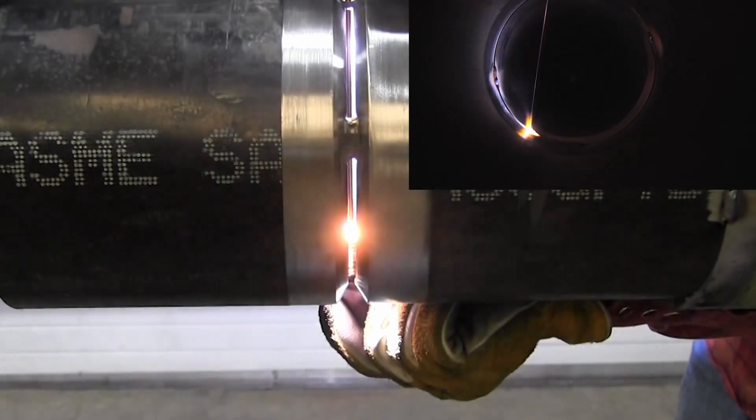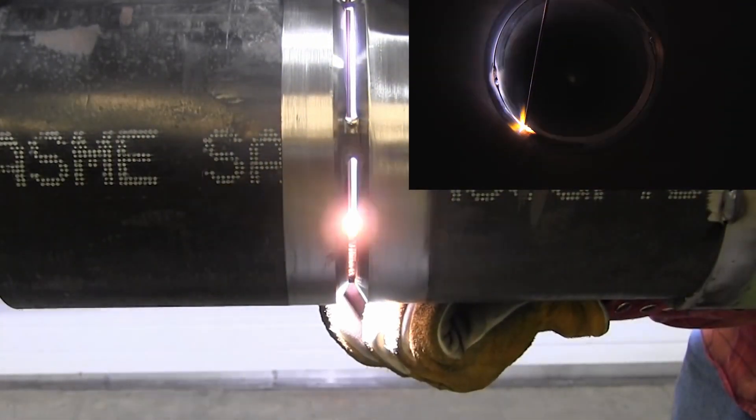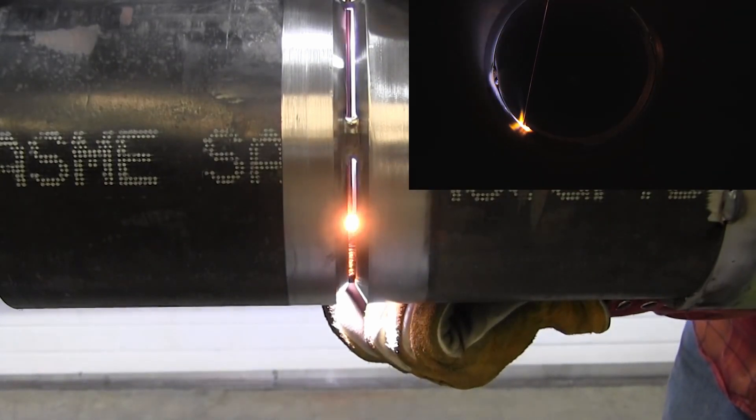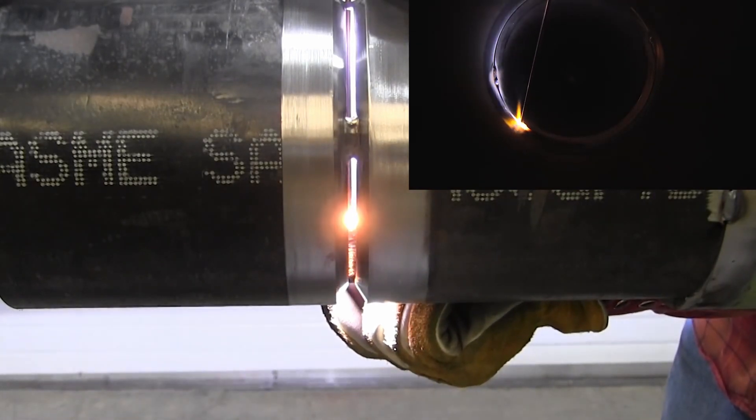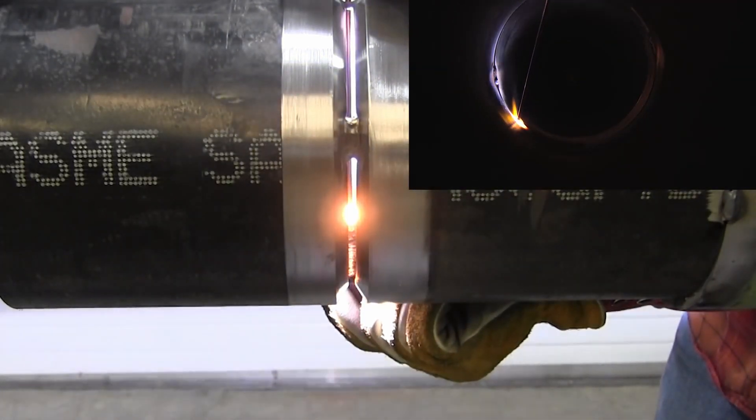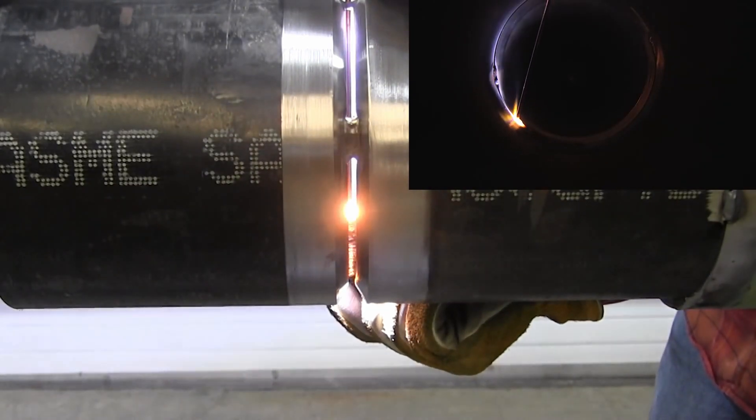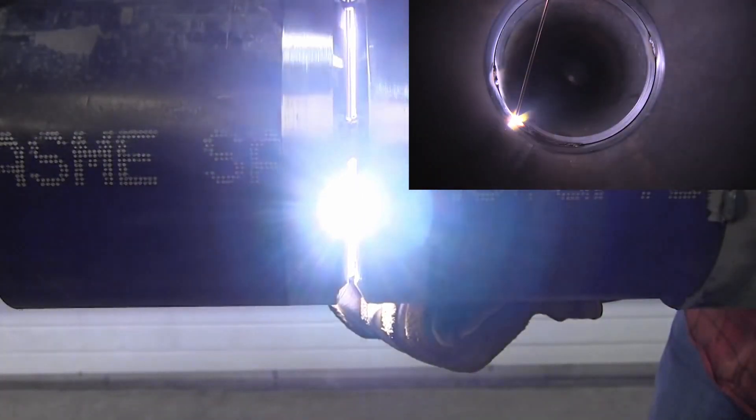Like you can tell when I lose it the arc gets pretty bright. That's not a big deal you just want to make sure you get that wire back in the puddle as fast as you can. If you have that wire outside the puddle for too long you'll start generating too much heat and you'll start getting sucked back. You'll get a really shallow root pass.